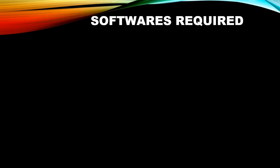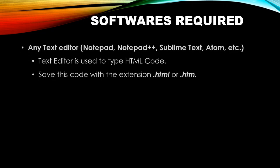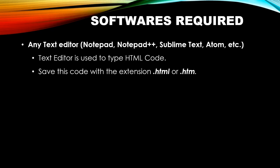To create web pages using HTML, two software are required. First is a text editor — you can use any text editor such as Notepad, Notepad++, Sublime Text, Atom, or Adobe Dreamweaver. This text editor is used to type the HTML code. When you type all the HTML code within the text editor, you need to save the file with the extension .htm or .html.